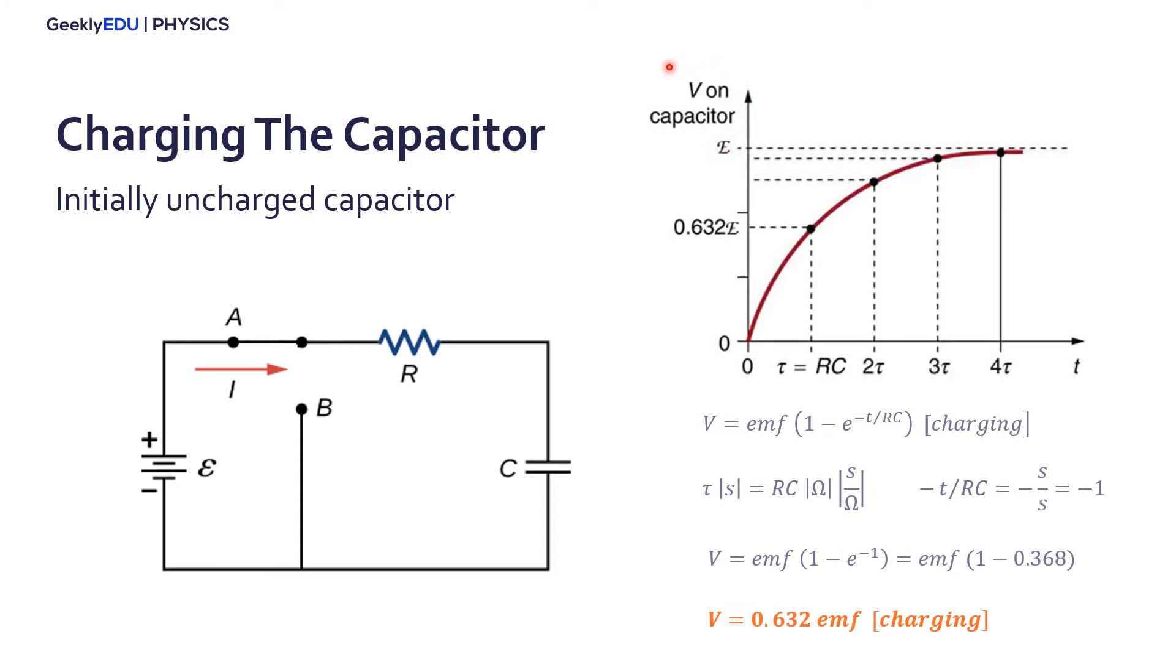If we plot the graph of voltage on the capacitor versus time, we get this exponential here. What does it mean exactly? It means that at each time constant, our capacitor will charge 0.632 times E. So it starts with zero. After one time constant, the capacitor will be charged 0.632 E.